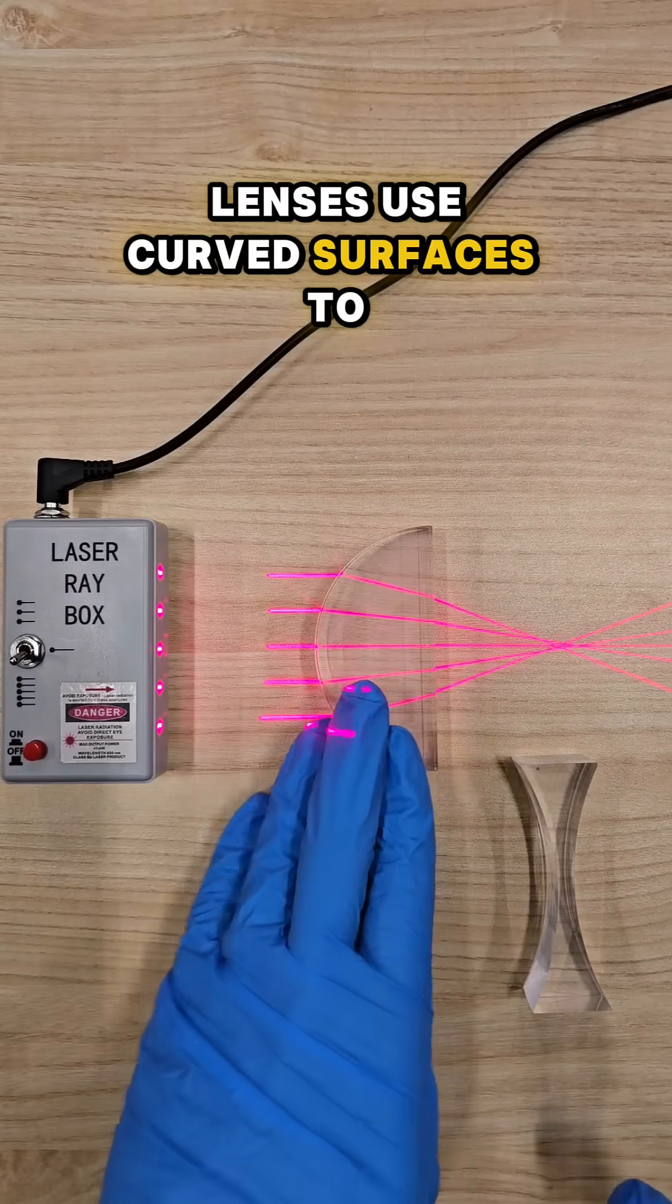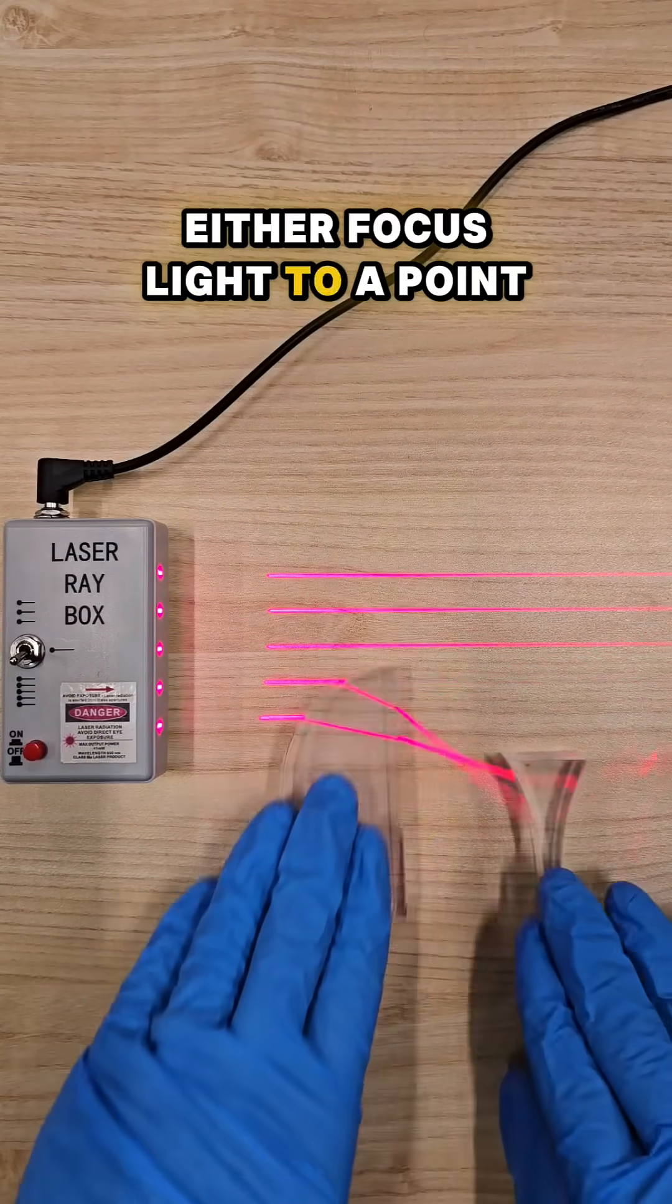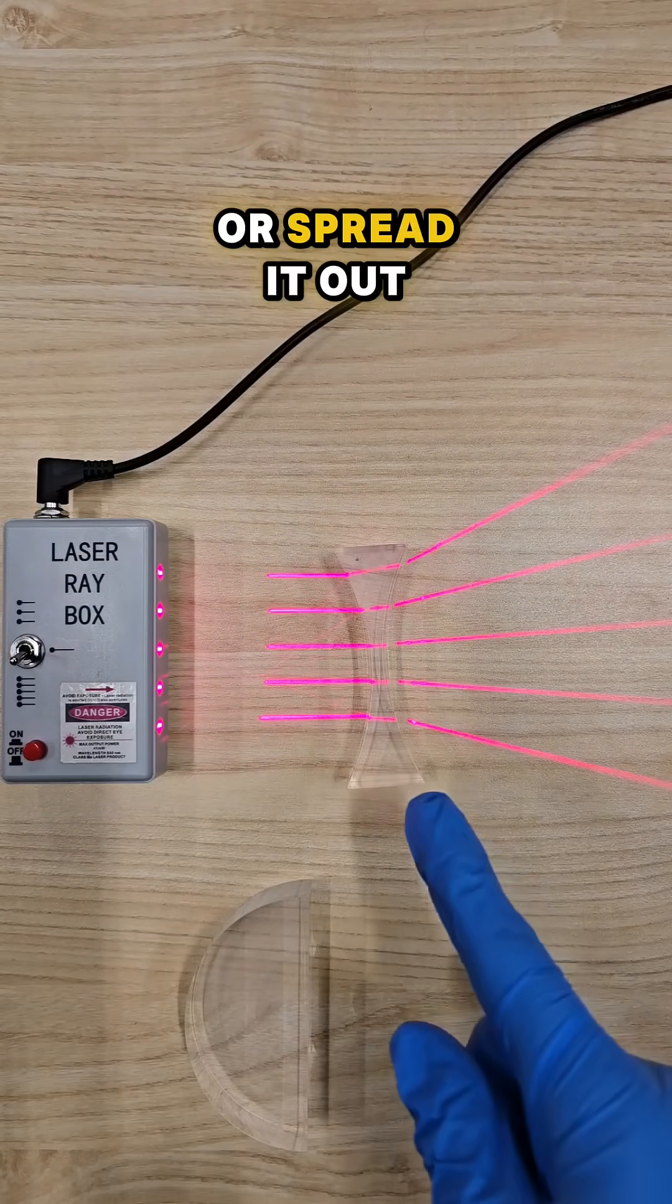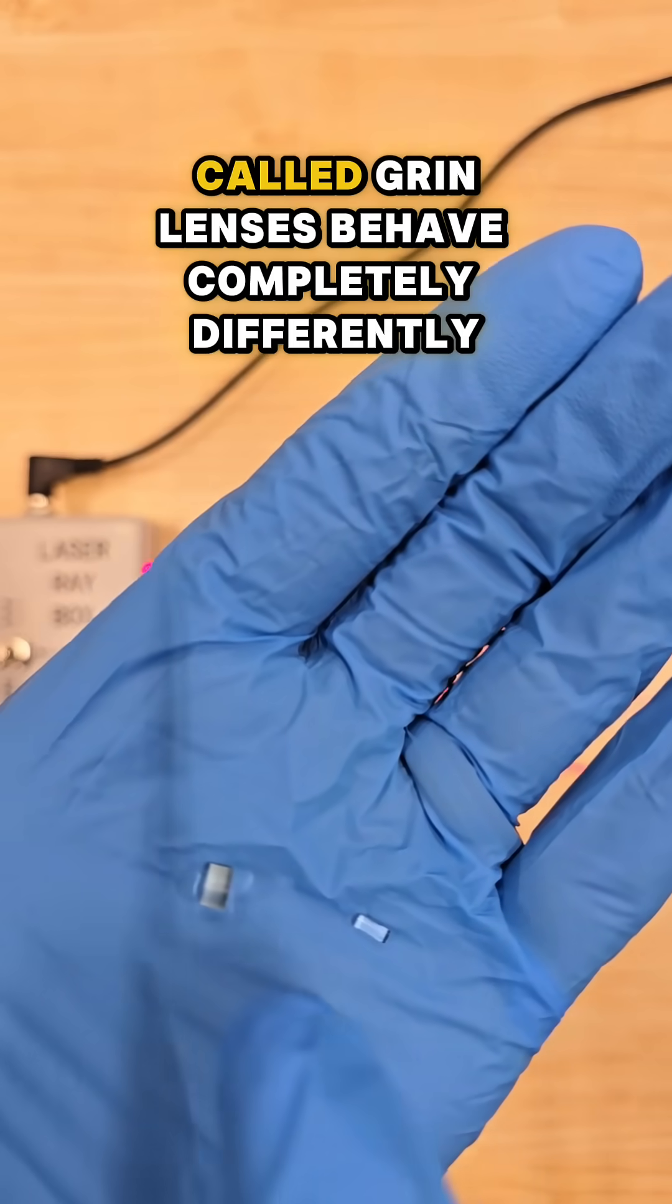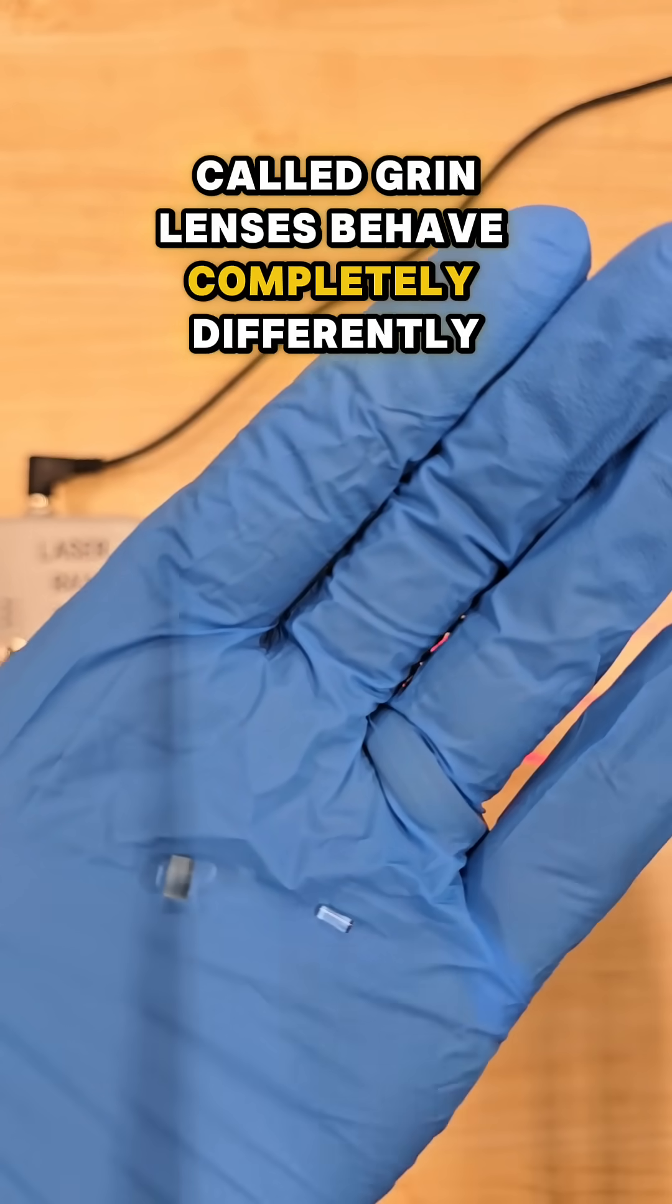Lenses use curved surfaces to either focus light to a point or spread it out. But these tiny little lenses called GRIN lenses behave completely differently.